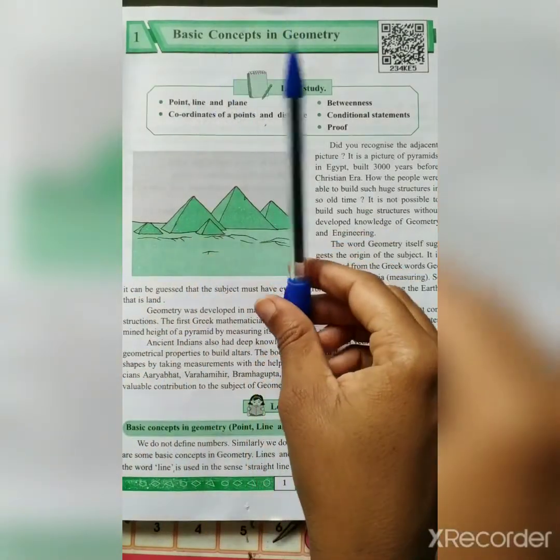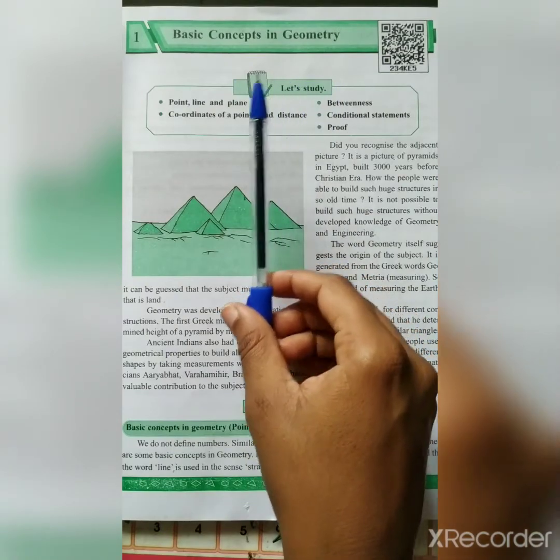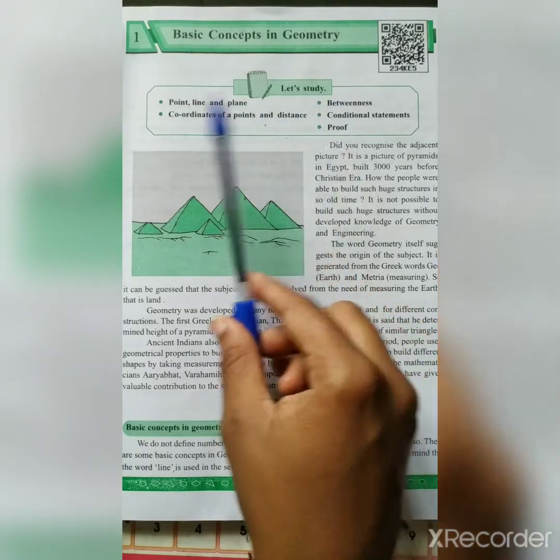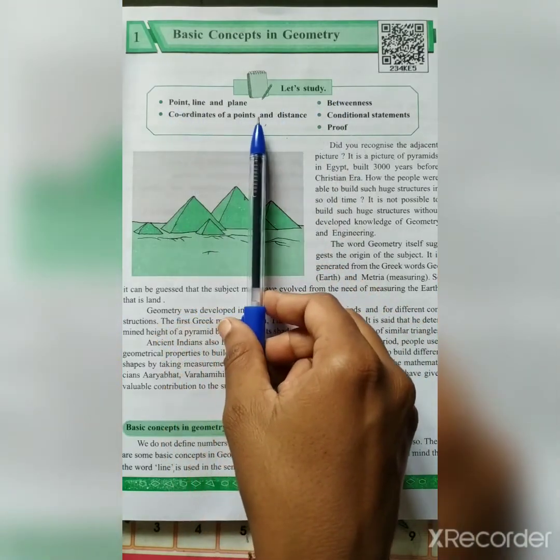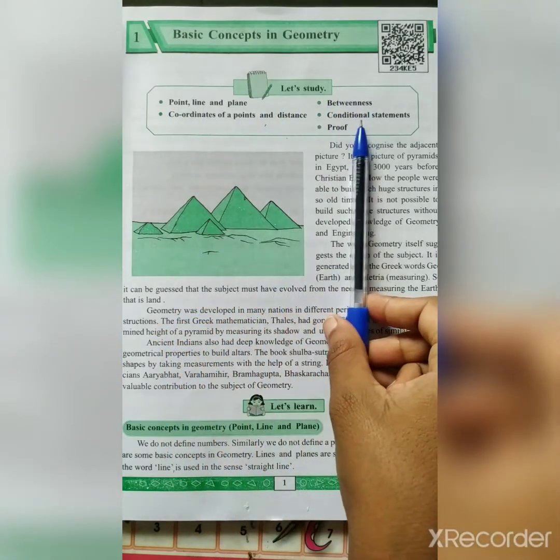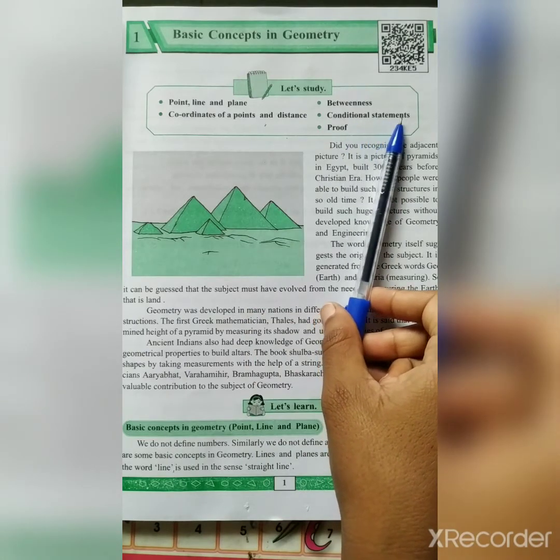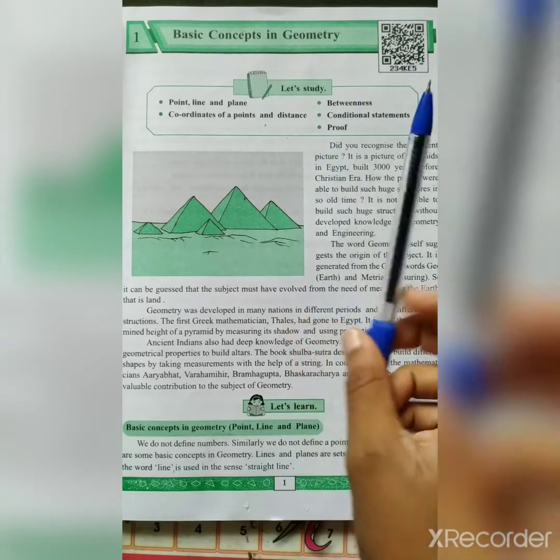In this lesson, we are going to see following points. First one is point, line and plane. Second one is betweenness. Third one, coordinates of points and distance. Coordination, sorry, conditional statements and last one is proof.